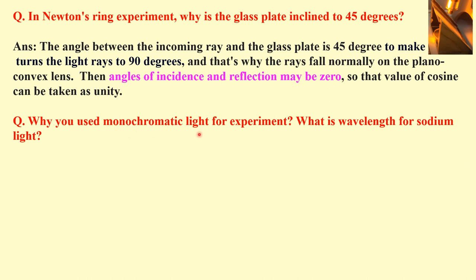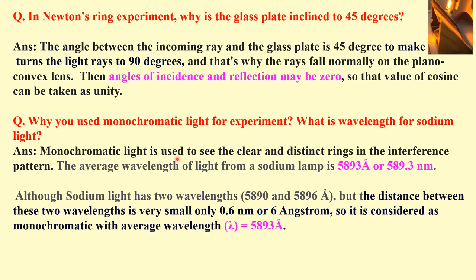Why do we use monochromatic light for this experiment, and what is the wavelength of sodium light? Monochromatic light is used to see clear and distinct rings in the interference pattern. The average wavelength for the sodium lamp is 5893 angstroms or 589.3 nanometers. Sodium light actually has two wavelengths — 5890 and 5896 angstroms — but the distance between these two wavelengths is very small, around 6 angstroms or 0.6 nanometers, so it is considered a monochromatic source with an average wavelength of 5893 angstroms.